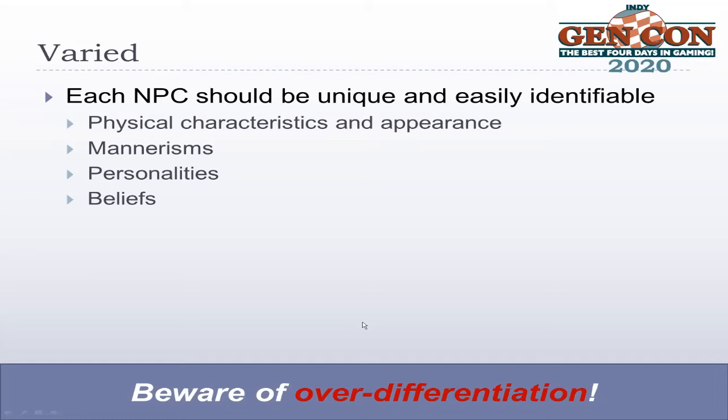If you think about Star Trek: The Next Generation, there was one engineering officer who just had a bit role — some guy who answered an ad to come on set, did one thing, and the fans liked him. At first he just had a last name, then a first and last name, then a backstory. He went from being an incidental character to a deliberate character. That can happen in your novels and games as well, so be careful of over-differentiation — make it deliberate when you do it.